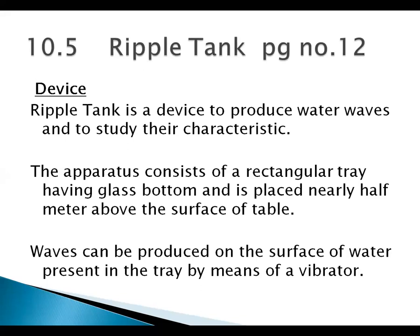This is the device which produces water waves. Then we study the characteristics of these waves with the help of the ripple tank. You can buy this ripple tank from the market — it costs around 2,500 to 3,000 rupees. It is a device used to produce water waves, and once the water waves are generated, we study their characteristics. It is a very important device used to study water waves, on page number 12 of your 10th class textbook.